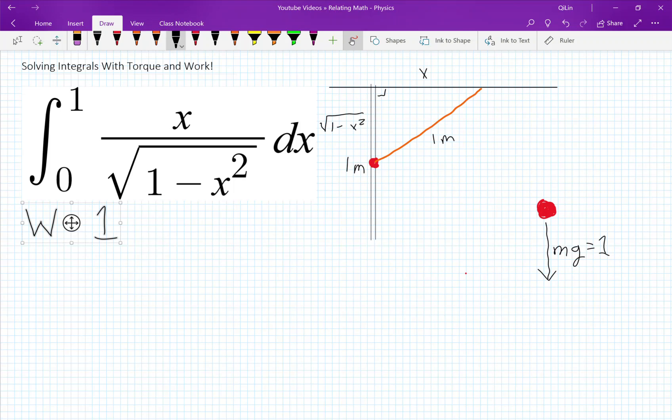Now we're going to get another definition of work which is equal to the integral from the origin which is 0 to the final position which is 1 of the instantaneous force dx. What is the instantaneous force you may be asking? Well that's just the force applied which we can draw here. That's the force applied. That might be a bit too thick but it's okay.